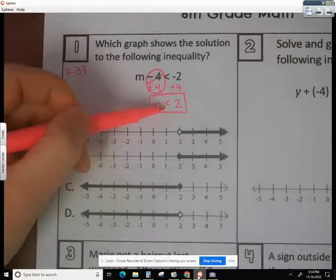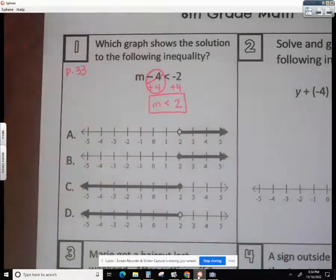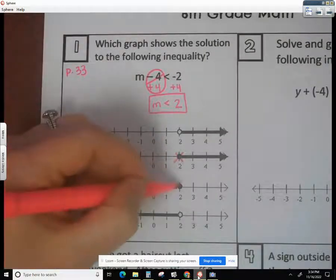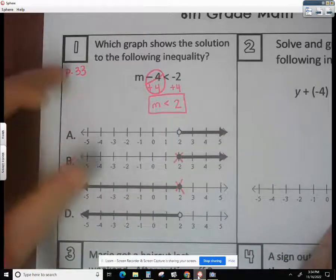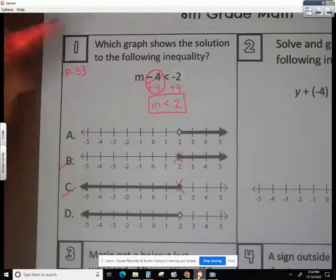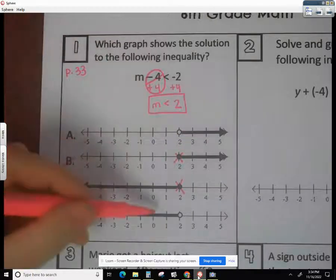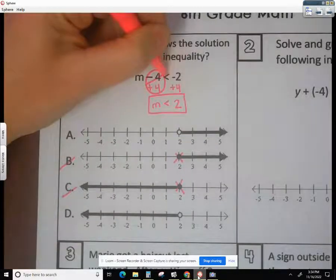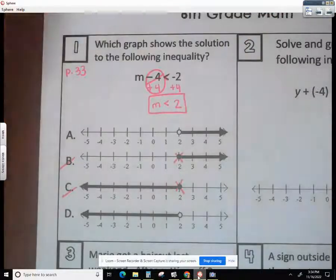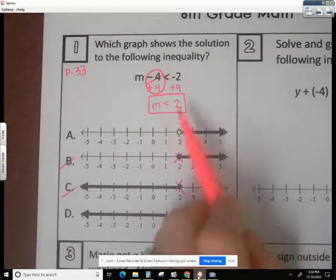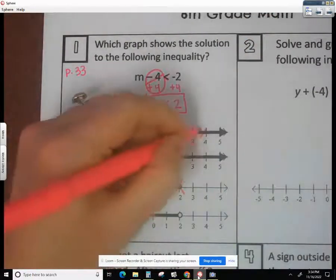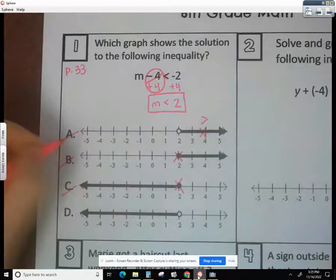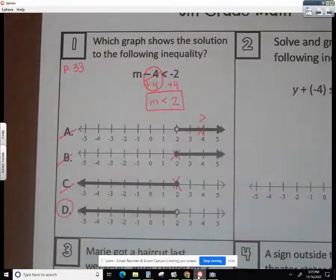When we have no line, we want no mouth guards. We don't want these closed in circles, which means B and C are not our answer. Now A is shaded to the right, D is shaded to the left. Think of it as an arrow. That arrow is pointing us in the direction we need to shade, and it's pointing to the left. So we don't want this, because that would be greater than. So our answer for number one is D.